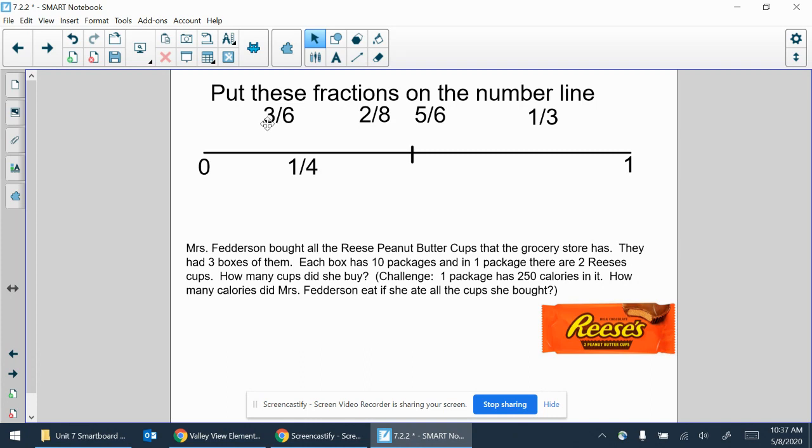Looking at this, oh, three sixths is a half. That's equivalent to a half. So I already marked that without even realizing it. So I can put that guy right there.